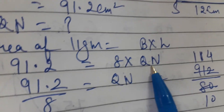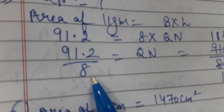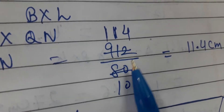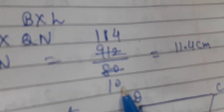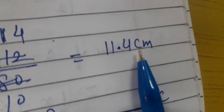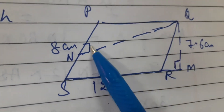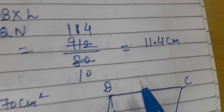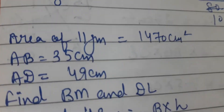I remove the decimal first, making it 912 by 80, then cancel using the table of 8. I get 114 upon 10, which I convert into decimal form — it becomes 11.4 centimeters. This means the height QN on base 8 centimeters is equal to 11.4 centimeters. Let's move to question six.